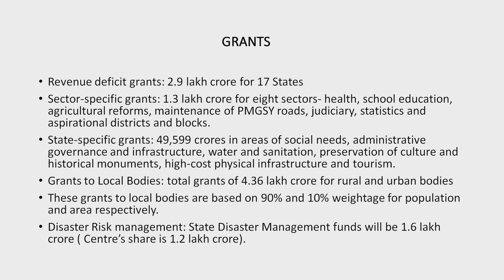Grants to local bodies: the total grants to local bodies will be Rs. 4.36 lakh crore, including Rs. 2.4 lakh crore for rural local bodies, Rs. 1.2 lakh crore for urban local bodies, and Rs. 70,051 crore for health grants through local governments. The grants to local bodies will be made available to all three tiers of panchayat, i.e., the village, block, and district levels. The health grants will be provided for conversion of rural sub-centres and primary health centres to health and wellness centres, support for diagnostic infrastructure for primary health care, and support for urban HWCs, sub-centres, PHCs, and public health units at the block level.